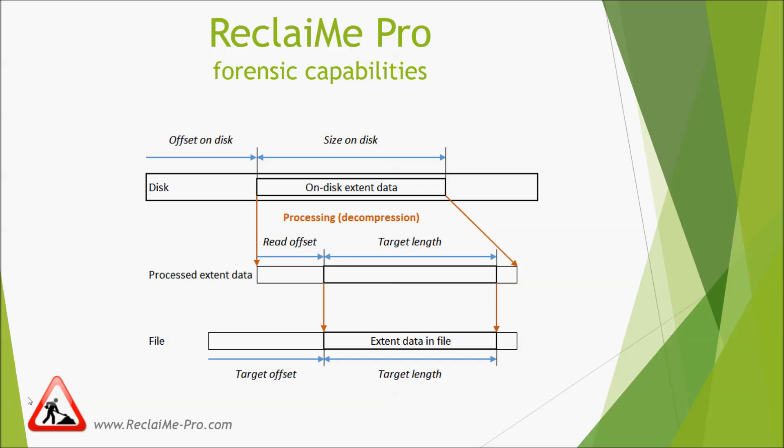Data on the disk is defined by the start address and the size. The size can be zero in the case of sparse extents, which have no data on disk. Processing is applied to the data and provides either a data block with a size larger than the data on disk — decompression — or a data block of the same size as data on disk, for example when removing generation numbers in NTFS. Theoretically, the size of uncompressed data can be less than the compressed block, but in practice we have not seen this yet.